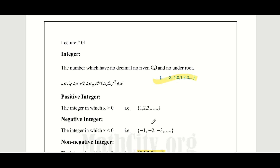Integers are numbers — either decimal or under root — meaning numbers written in a proper form. On the real line we have 0, 1, 2, 3 and on the negative side minus 1, minus 2, minus 3, and so on. The set of integers is written as: 0, 1, 2, 3 and minus 1, minus 2, minus 3, up to so on.